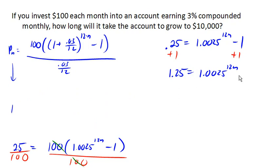So now we can apply the logarithm to both sides of the equation. And the logarithm lets us take that exponent and pull it down in front. So we'll have log of 1.25 equals 12n times the log of 1.0025.